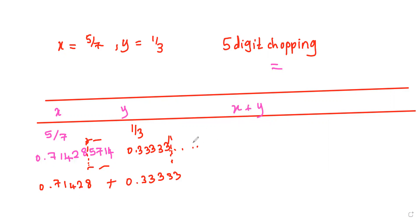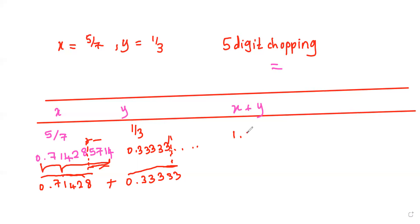Once we press the add sign for these two, remember the calculator is going to use the stored chopped values — it has only stored up to those five digits. So it's going to use 0.33333 plus 0.71428 and add them up, giving an answer of 1.04761.